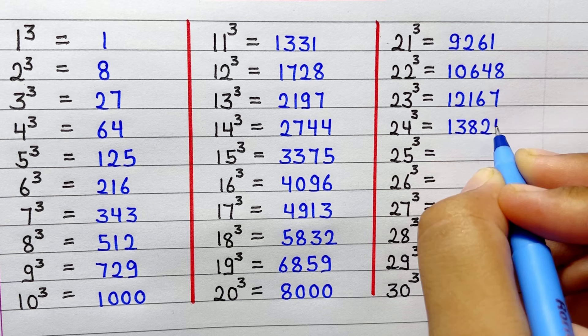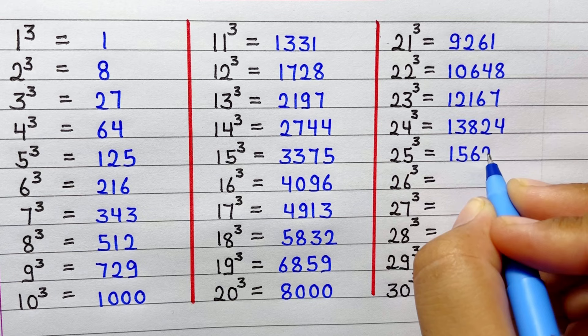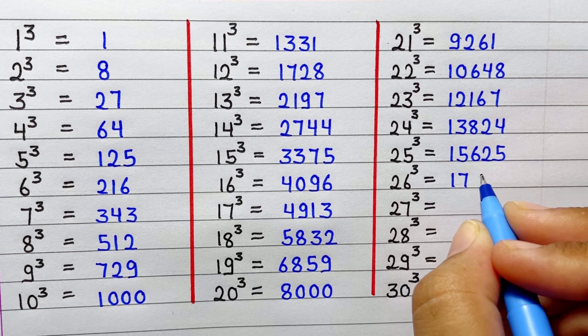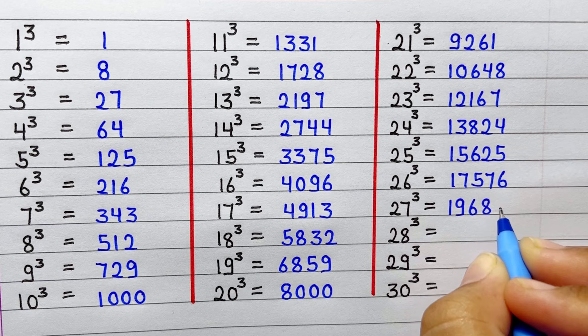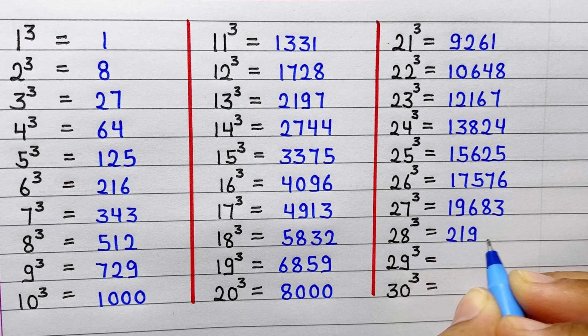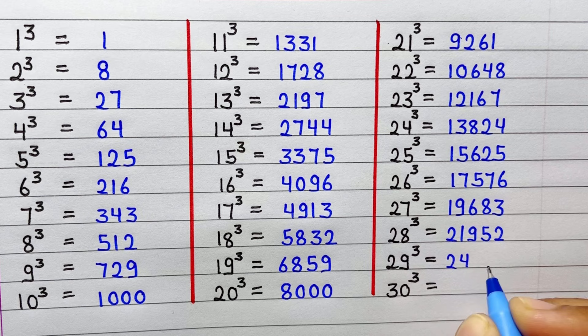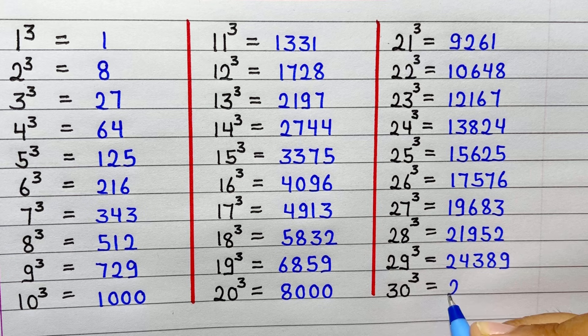Cube of 25 is 15625. Cube of 26 is 17576. Cube of 27 is 19683. Cube of 28 is 21952. Cube of 29 is 24389. Cube of 30 is 27000.